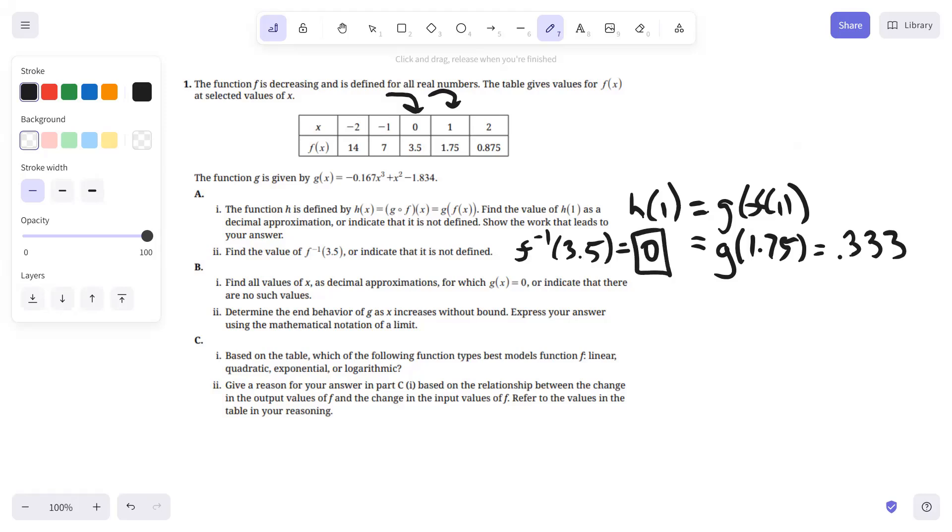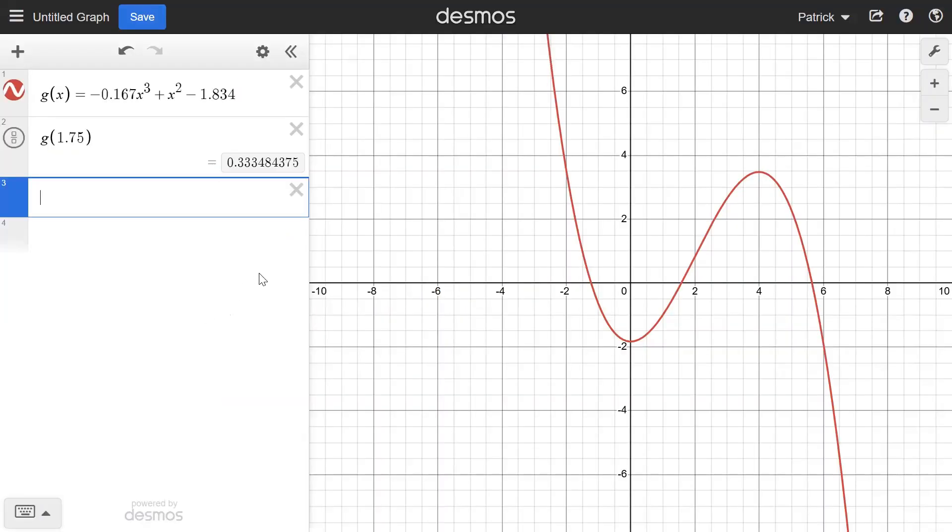Part B, find all values of X as a decimal approximation for which G of X equals 0 or indicate that there are no such values. Head over to Desmos again. Here we are back at Desmos, and G of X equals 0 when it crosses the X axis, so we can click right there, get that one, click right there, that one, click right there, that one.